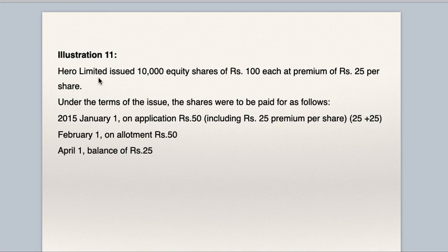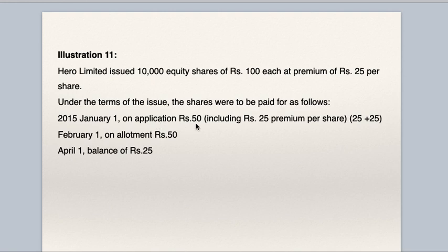Illustration 11: Hero Ltd issued 10,000 equity shares of Rs. 100 each at a premium of Rs. 25 per share. So, number of shares issued are 10,000 and issue price is 100 plus 25, that is 125. Shares are issued at premium. Under the terms of the issue, the shares were to be paid for as follows. On application Rs. 50, including Rs. 25 premium per share. So, 25 rupees premium is with application. Application is 50, so out of this 50, Rs. 25 should go to capital and Rs. 25 should go to securities premium.